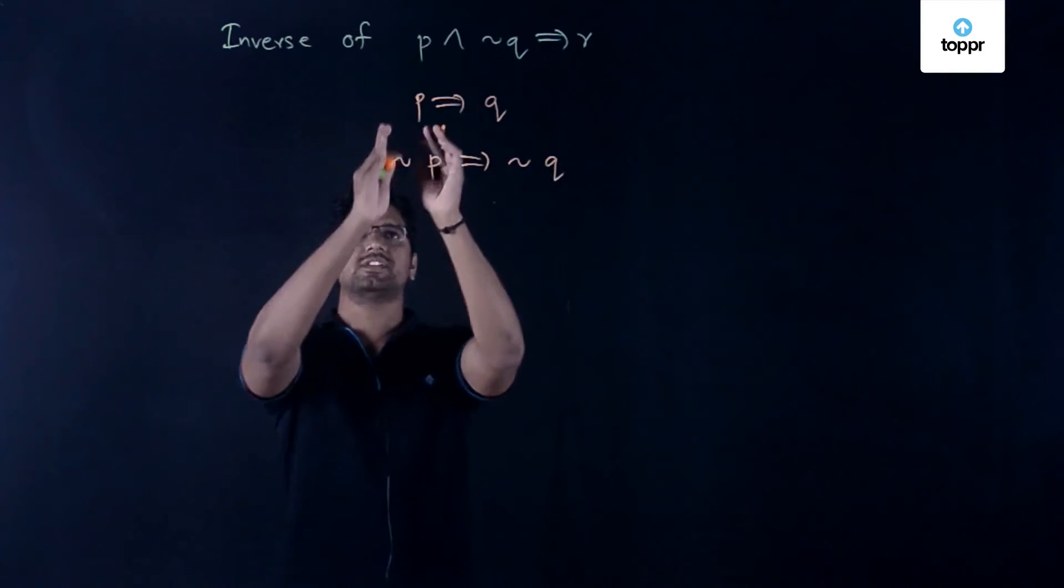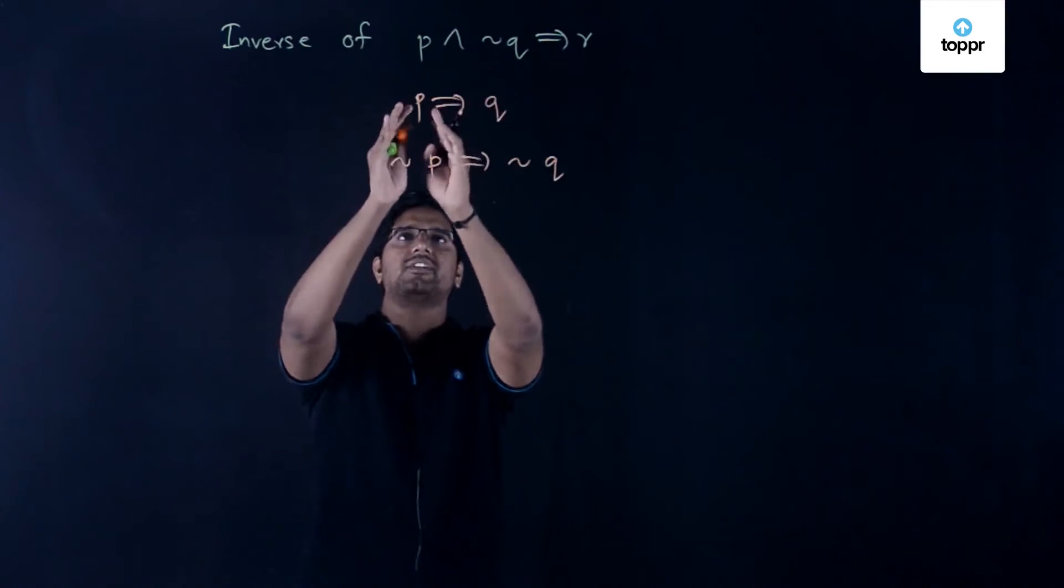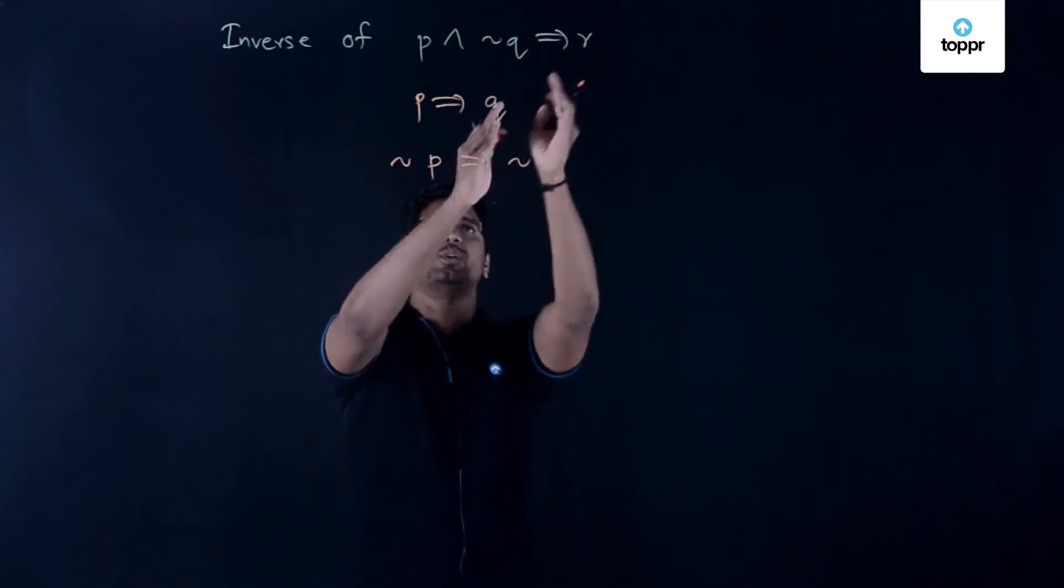This is the inverse of the general statement p implies q. Now things become very clear. Just we have to say instead of p there is p and negation of q, and instead of q we have r.